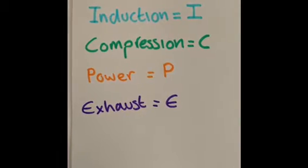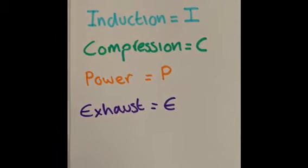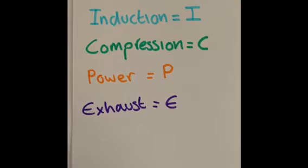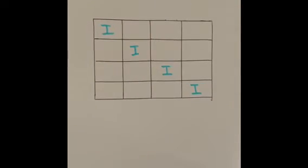To start with, you need a little key. So if induction is I, compression is C, power is P, and exhaust is E. The next thing you need to do is draw a four by four table.